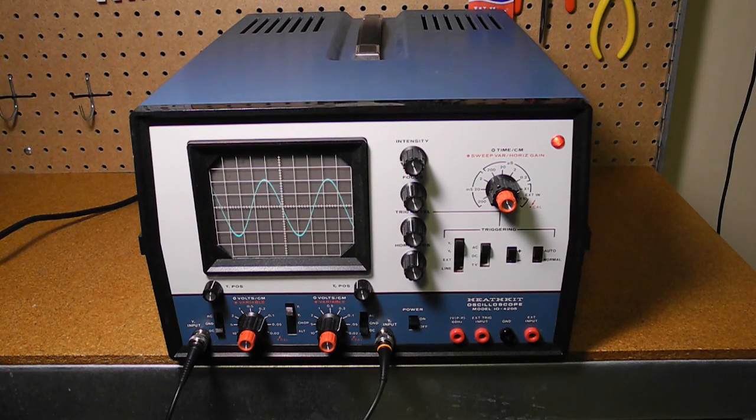In this video I give an overview of the Heathkit IO4205 Dual Trace Oscilloscope, a piece of vintage test equipment offered in kit or fully assembled form by the Heathkit company in the 1980s.